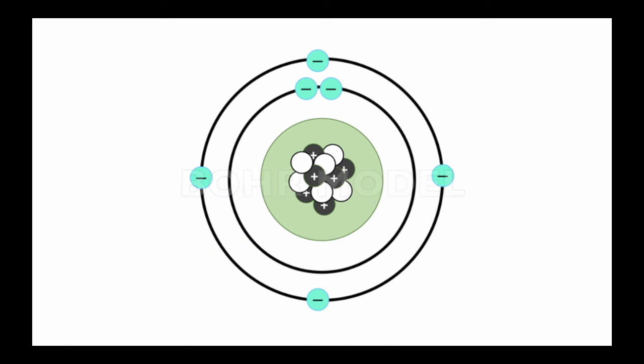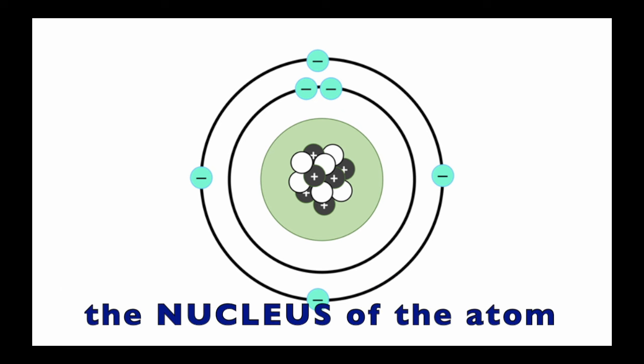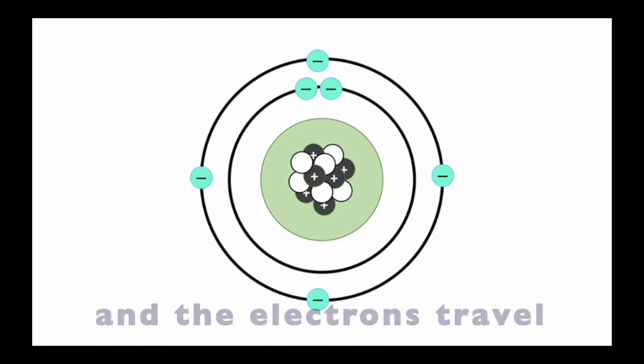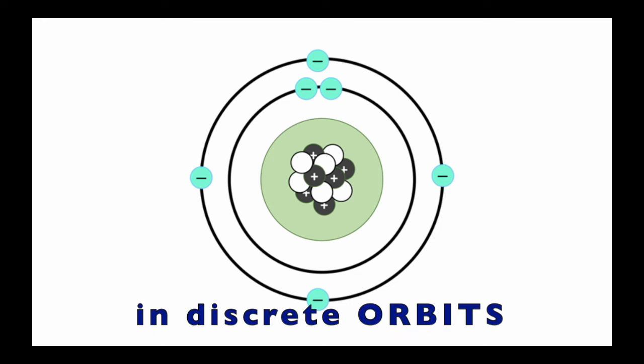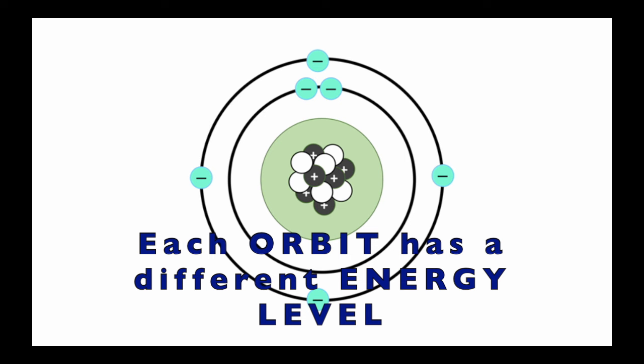In the Bohr model, the protons and neutrons are in the center, the nucleus of the atom. And the electrons travel in discrete orbits around the nucleus. Each orbit has a different energy level.